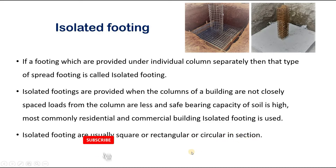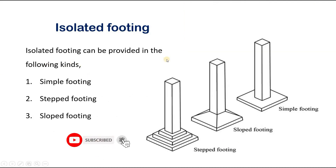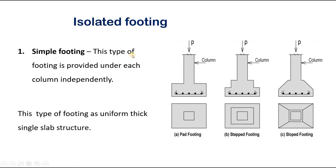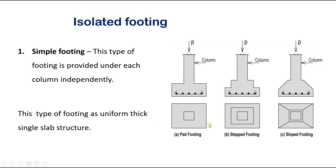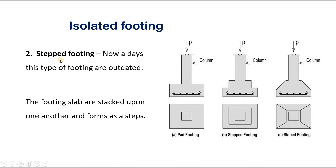Isolated footings are usually square, rectangular, or circular in section. The isolated footing can be provided in the following kinds: simple footing, step footing, and slope footing. Simple footing is also called flat footing, pad footing, or plain footing. This type of footing is provided under each column independently, as shown in the figure, and has a uniform thick single slab structure.